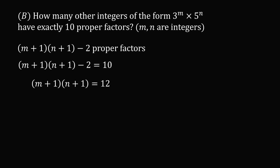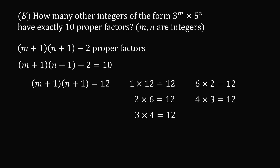Adding 2 to both sides, we get (m+1)(n+1) = 12. So we need to count how many ways two positive integers multiply to give 12, where order matters because we have m and n. We have: 1×12, 2×6, 3×4, 6×2, 4×3, and 12×1 — so there are 6 possible pairs (m, n), meaning 6 ways for 3 to the m times 5 to the n to have exactly 10 proper factors.